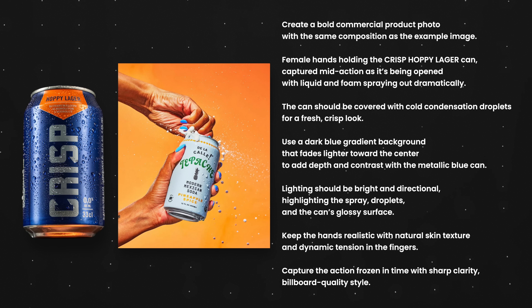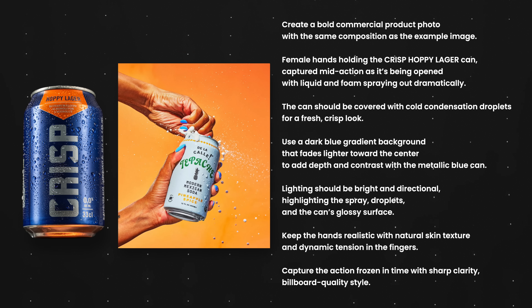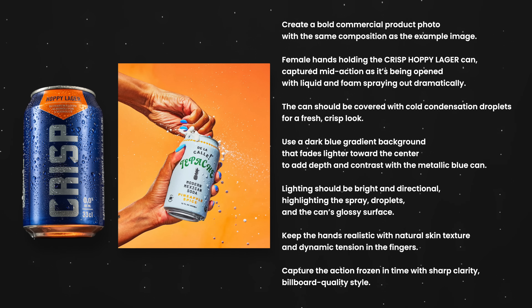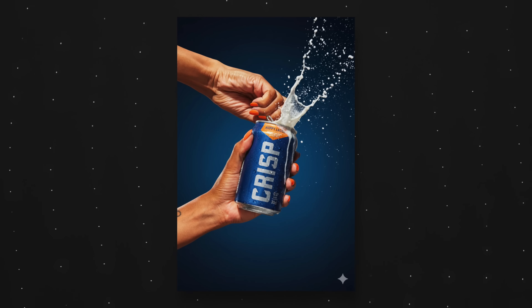For the next example I wanted to see how well the model is able to place a product into an already existing image. I asked it to keep the exact same style and composition as a reference image but place a crisp beer can in the scene instead and change the background to a dark blue matching the beer can. And this is the result it came up with.